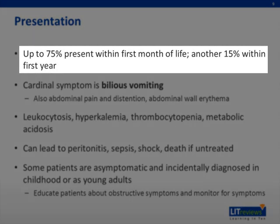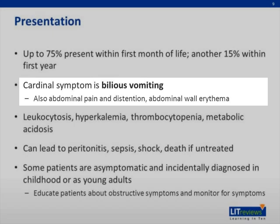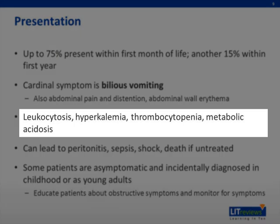Up to 75% of children with malrotation present within the first month of life. Another 15% present within the first year. The cardinal symptom of malrotation is bilious vomiting. Other symptoms include abdominal pain and distension, and abdominal wall erythema. Lab abnormalities include leukocytosis, hyperkalemia, thrombocytopenia, and metabolic acidosis.